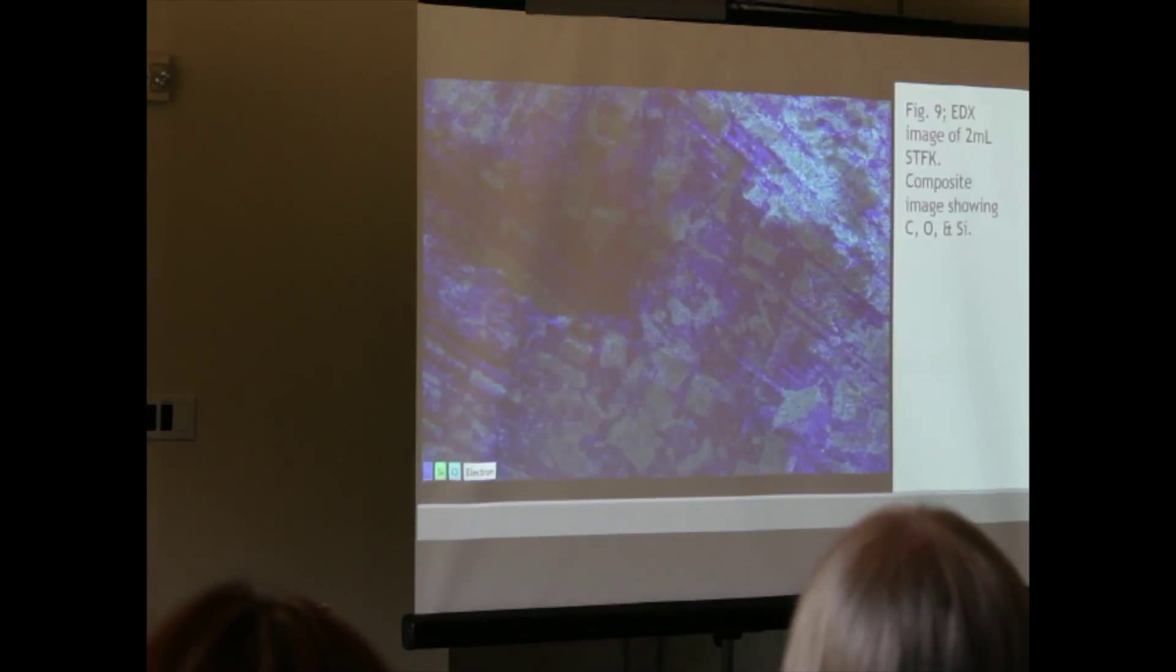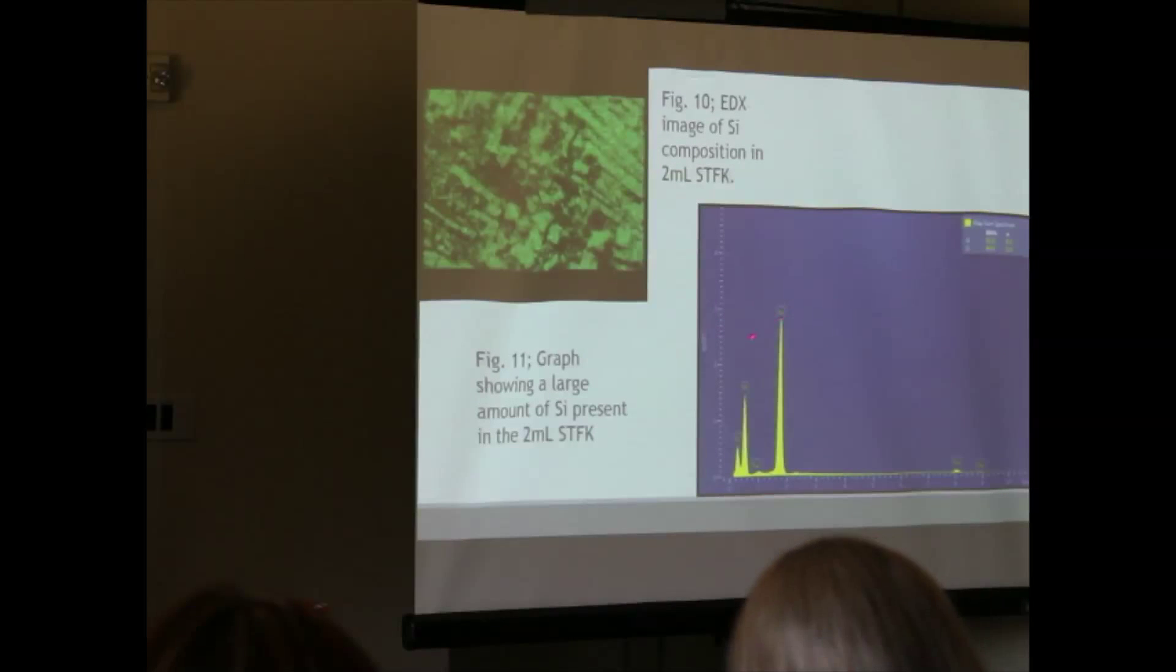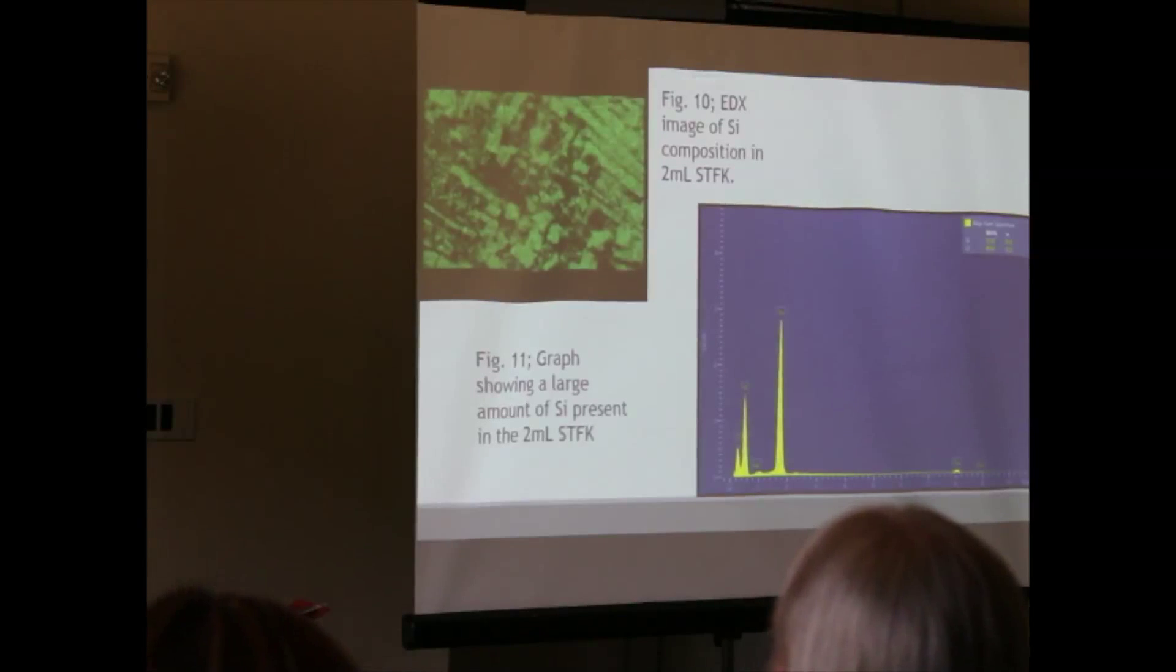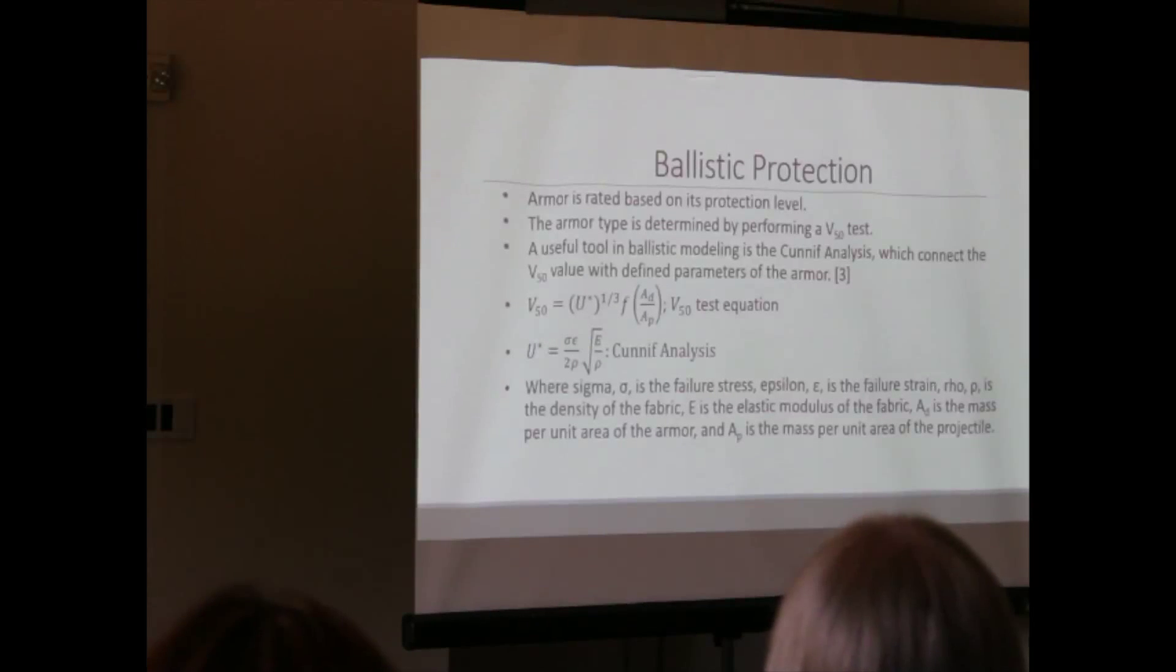This is an EDX image, which shows the elemental composition of the Kevlar after treatment. You can see that there is a lot of silica, which you would expect since it's a silica-based colloidal suspension. And then also a lot of carbon and oxygen, which is what polyethylene glycol is made of, as well as Kevlar. You see there's a high amount of silica in here. And again, this is with only the silica composited into the sample picture. So like I said, I believe that I succeeded in properly treating the Kevlar for its purposes that we were doing it anyway.